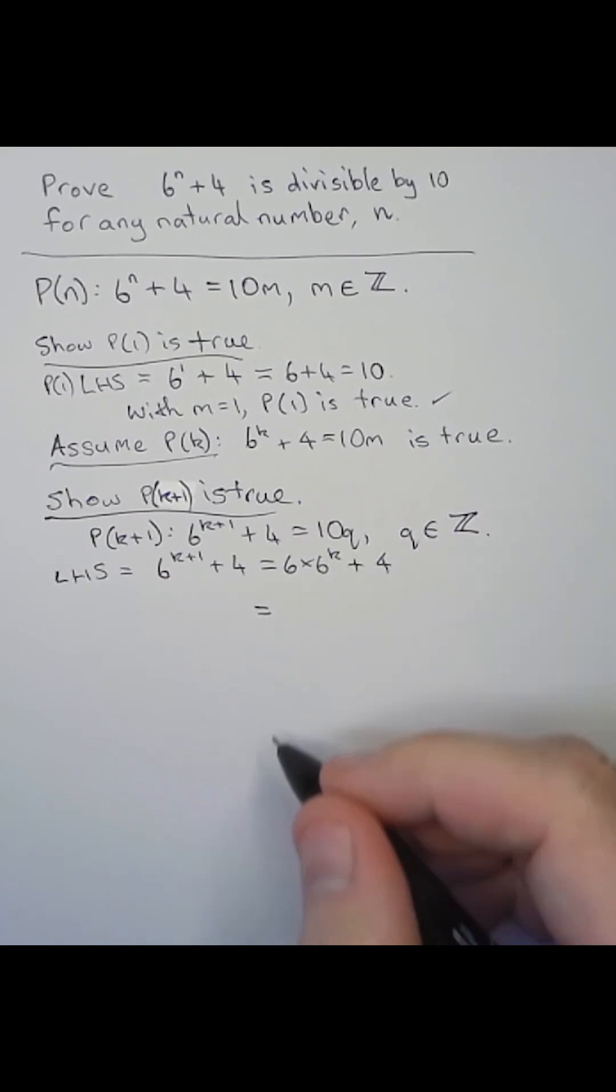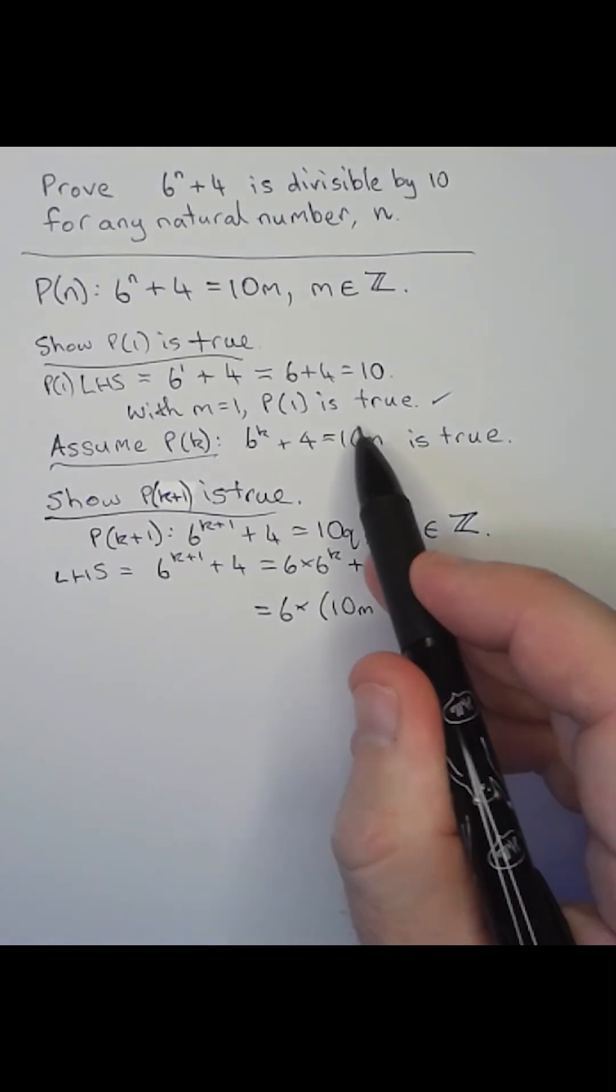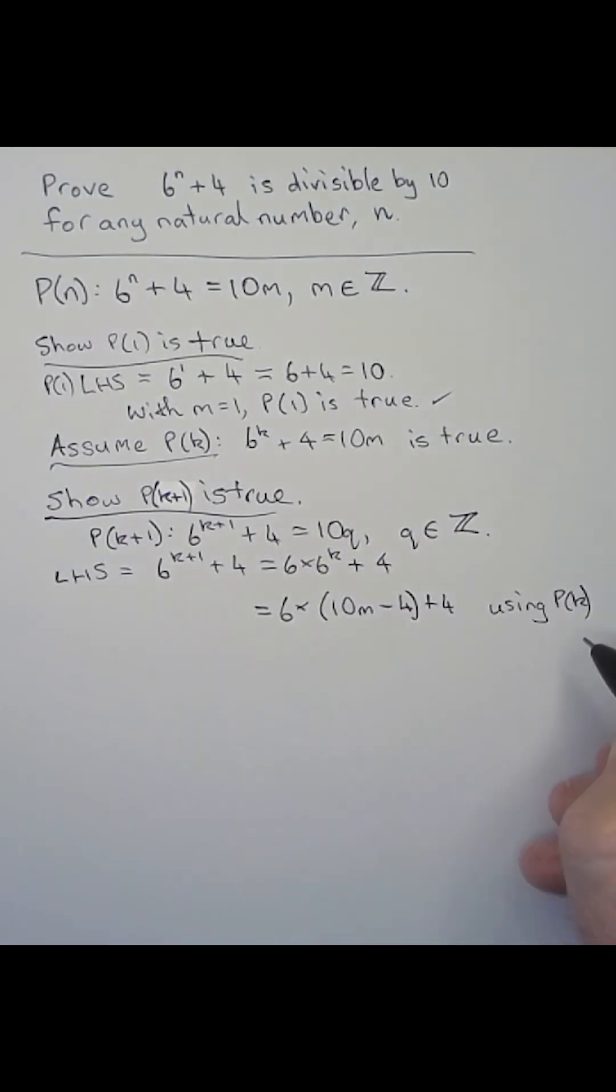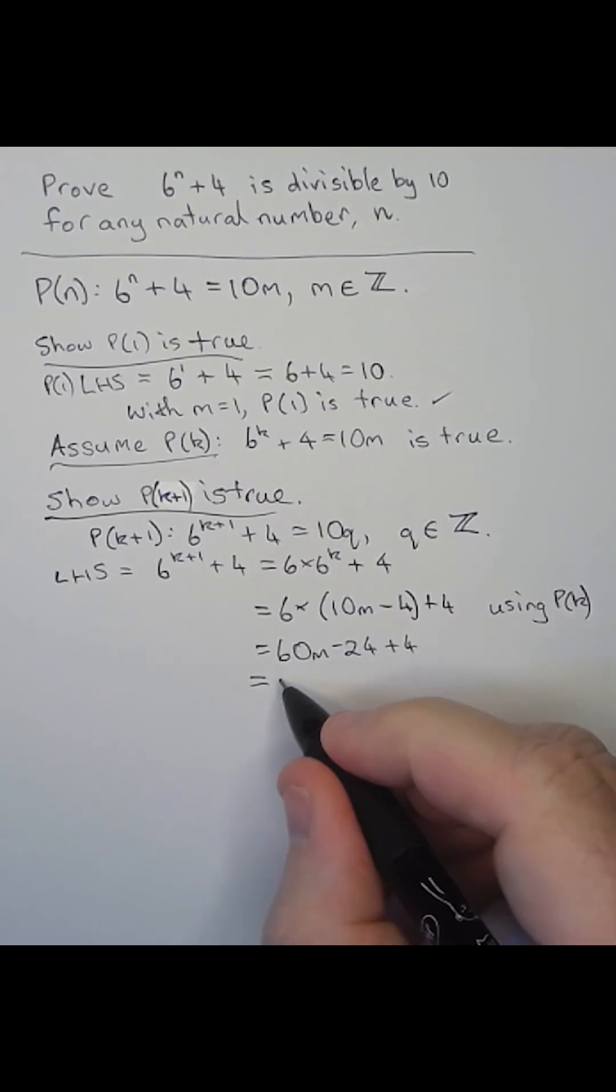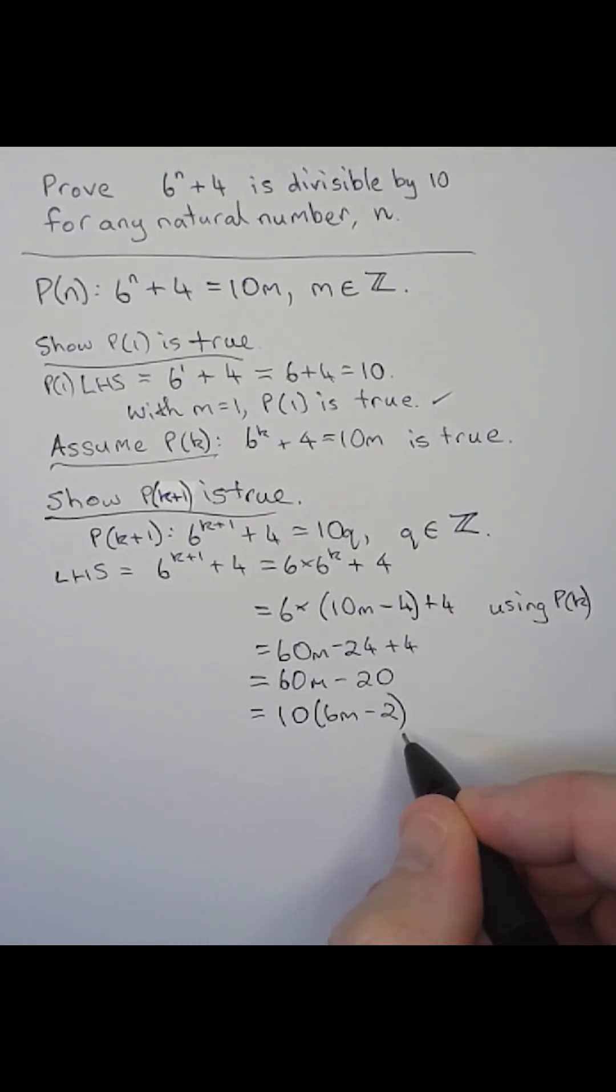We can rewrite the left side using the assumption P(k). Expanding, simplifying, and refactoring, we find that this is again 10 multiplied by some integer.